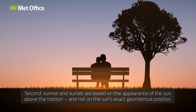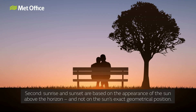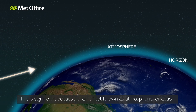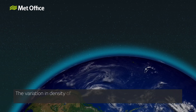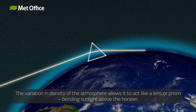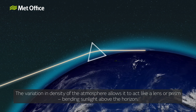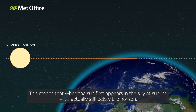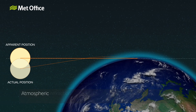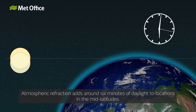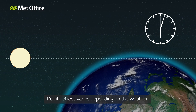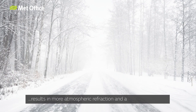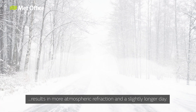Second, sunrise and sunset are based on the appearance of the Sun above the horizon, not on the Sun's exact geometrical position. This is significant because of an effect known as atmospheric refraction. The variation in density of the atmosphere allows it to act like a lens or prism, bending sunlight above the horizon, meaning that when the Sun first appears at sunrise, it's actually still below the horizon. Atmospheric refraction adds around six minutes of daylight at mid-latitudes, but its effect varies depending on the weather — lower temperature, higher humidity, and higher air pressure result in more atmospheric refraction and a slightly longer day.